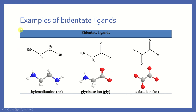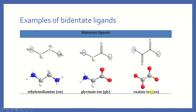Some examples of bidentate ligands: in this class, I ask you to remember this one — the bidentate ligand whose name is ethylenediamine, abbreviated EN. One molecule of ethylenediamine has two donor atoms: this nitrogen and this nitrogen. So one molecule of EN can form two bonds to the metal ion. Other bidentate ligands shown here are the glycinate ion and the oxalate ion, but you must recognize EN.